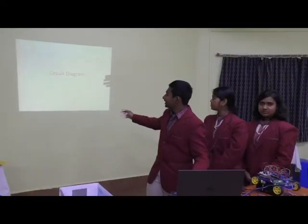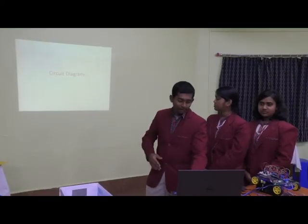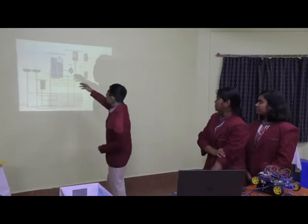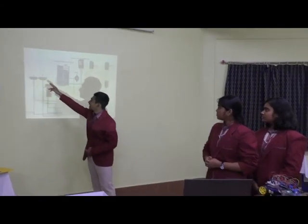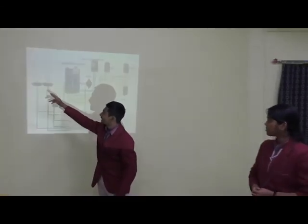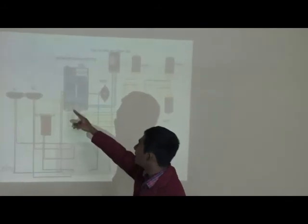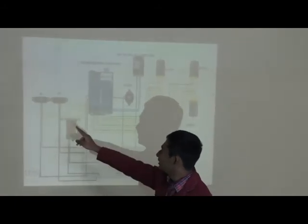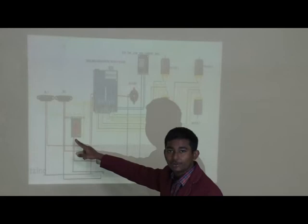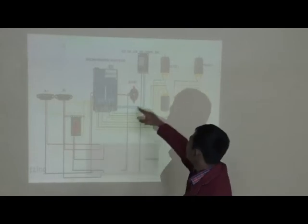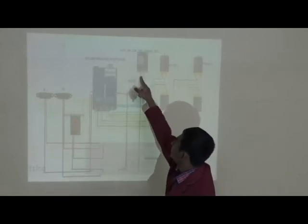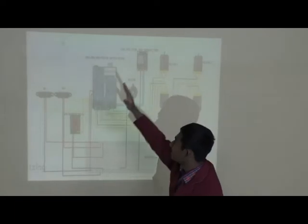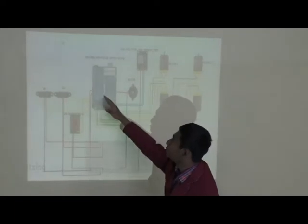Here we have the circuit diagram for the model. This is the Arduino Uno. The two IR sensors integrated at the exit gate have been connected to the Arduino through the breadboard. The gas sensor, the MQ gas sensor, the buzzer, the GSM module, and the four motors — all have been connected to the Arduino.